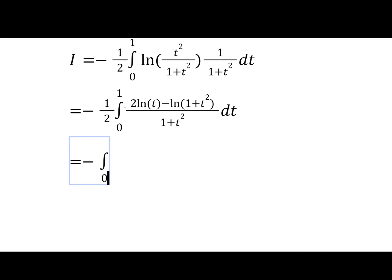So we're just going to split up the integral, pretty standard stuff. We'll get log t over 1 plus t squared, and then we'll have plus half the integral of log 1 plus t squared over 1 plus t squared.